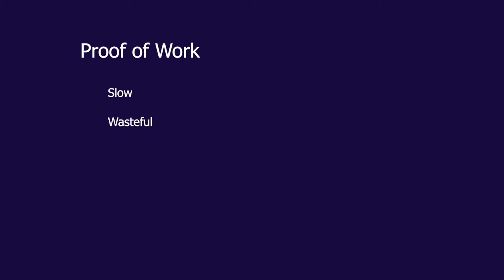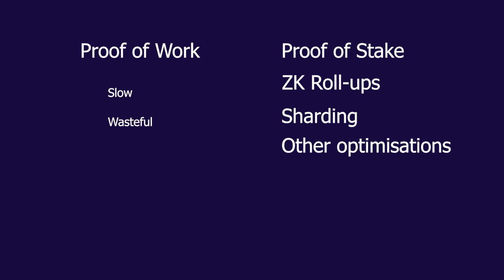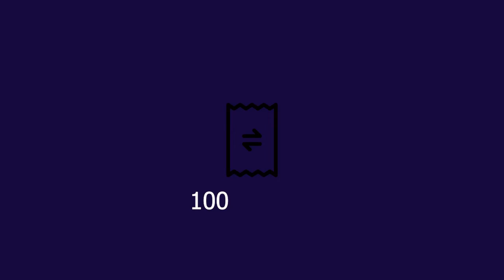The second problem we discussed was that proof of work is generally a little slow and wasteful. Ethereum tries to solve that by using something called proof of stake, which we discussed in the last video. Ethereum has not yet moved to proof of stake, so transactions per second are still pretty low, but they claim that once they add proof of stake, ZK rollups, sharding, and other optimizations, the transactions per second could go as high as 100,000. But that's still far away until Ethereum V2 is released.